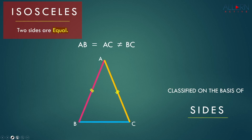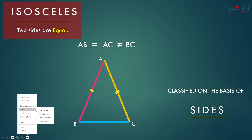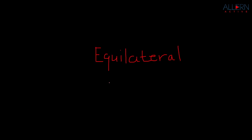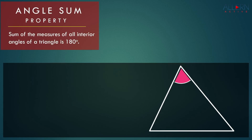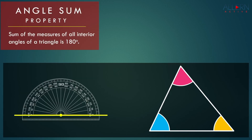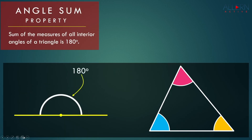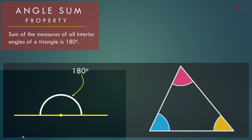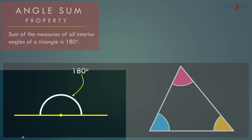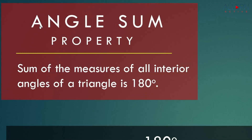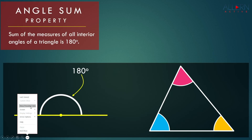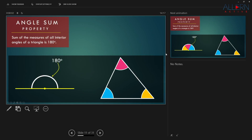If you wish to write on a blank screen, click on the three dots, then select the screen option. You have the black or white screen to choose from. Choose the one you want and you have the entire space to write on. You can also zoom a particular part of the screen by selecting the magnifier option at the bottom left - select the part you want to zoom and it will oblige. By selecting the presenter view, you can have an idea about what the next animation is going to be.